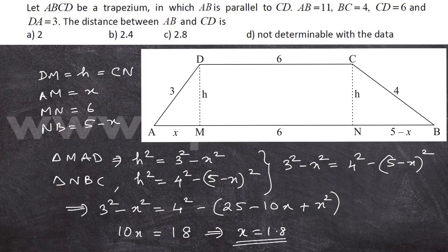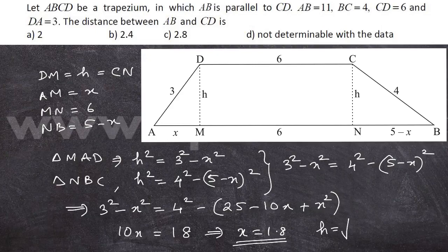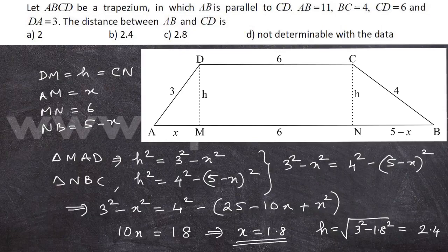Now you can easily find H as root over 3 square minus 1.8 square. That will come out to be 2.4. So your answer is option B.